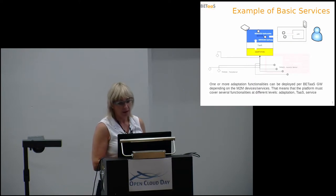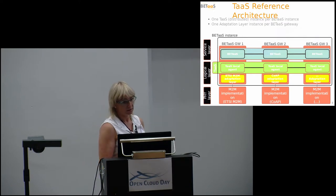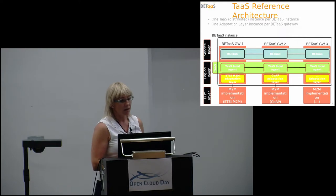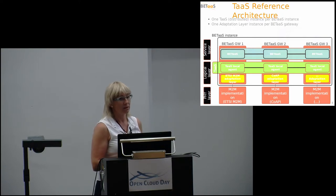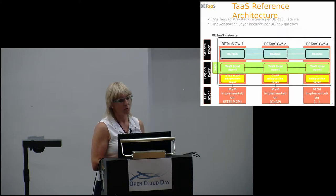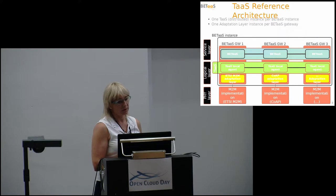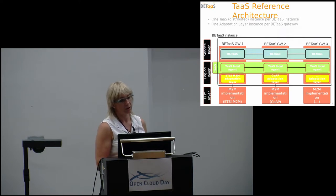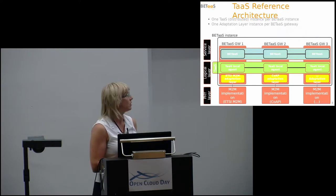We have built this Things as a Service reference architecture in a layered approach with three main layers that interact via uniquely designed Application Programming Interfaces. The physical layer hosts all physical things or devices, and interacts with the Things as a Service layer — the logical layer — which represents these physical things as simple entities by means of an adaptation API. Another application API enables connection to the application layer.